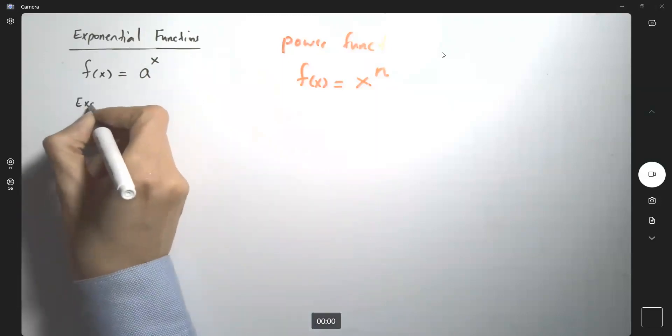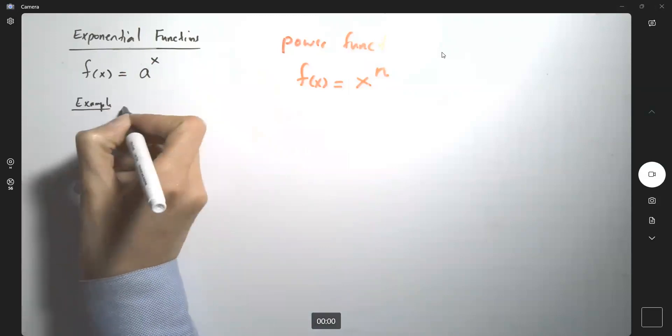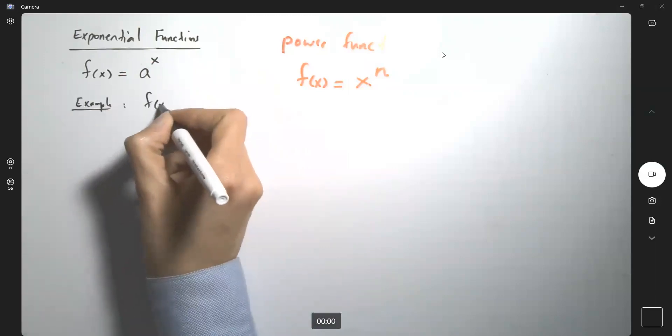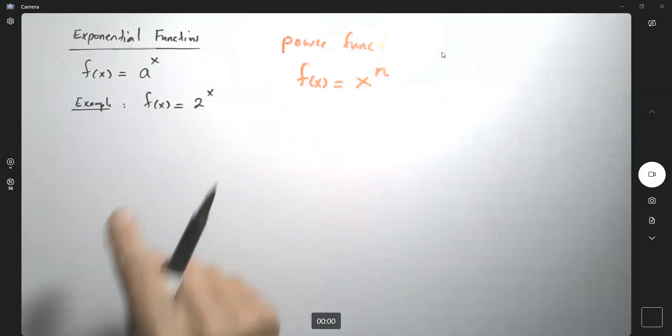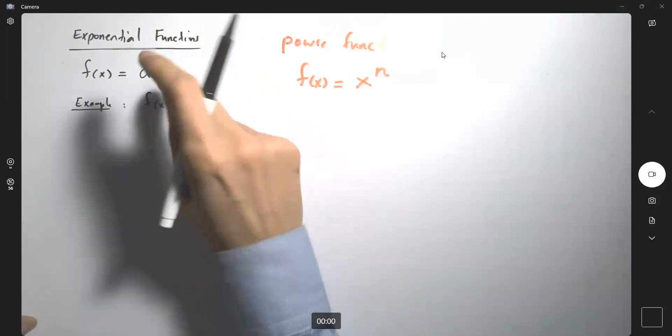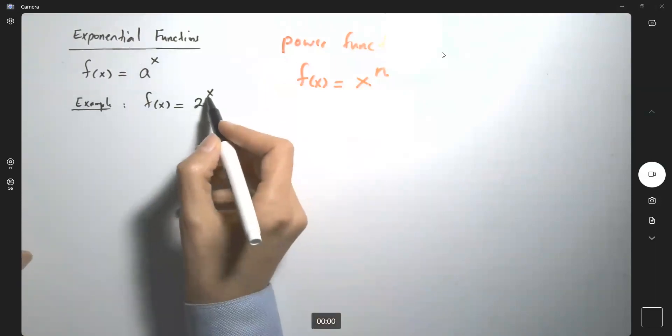For example, we always start by talking about f(x) = 2^x. 2 is the base and x is the exponent.